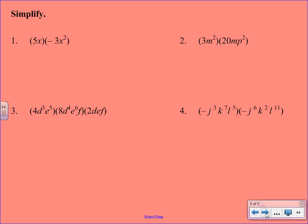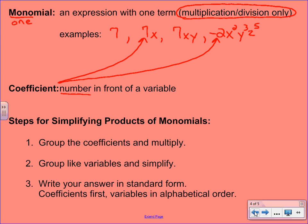Alright, so our first example, we're going to follow the steps that you just wrote down, and we're going to start by grouping the coefficients. So the coefficients here are going to be 5 and a negative 3. And we are multiplying, so we're going to continue to multiply, so 5 times negative 3. Then we're going to group the like variables. And in this problem, we only have one variable. So we're going to do x to the first times x to the second.